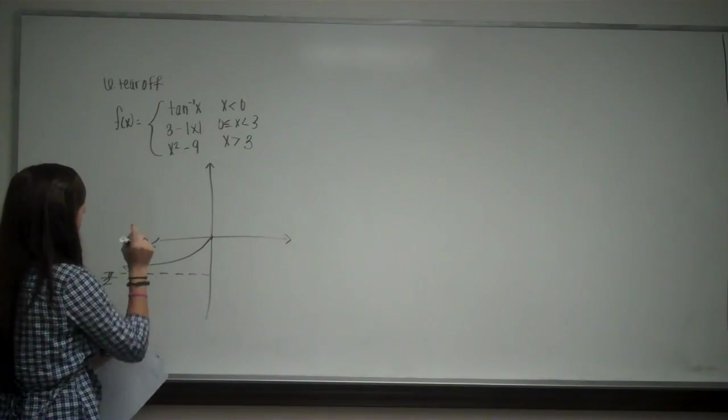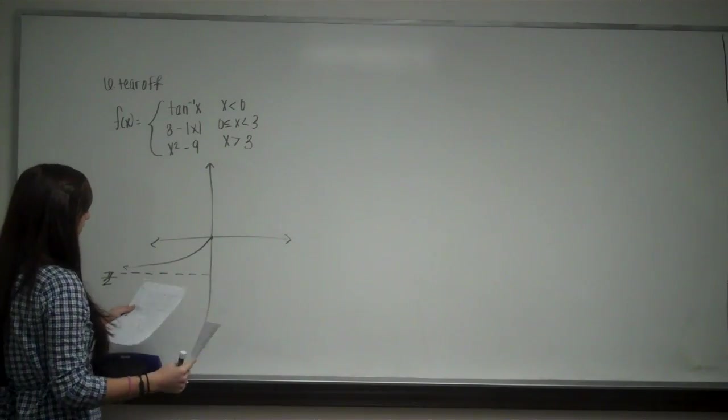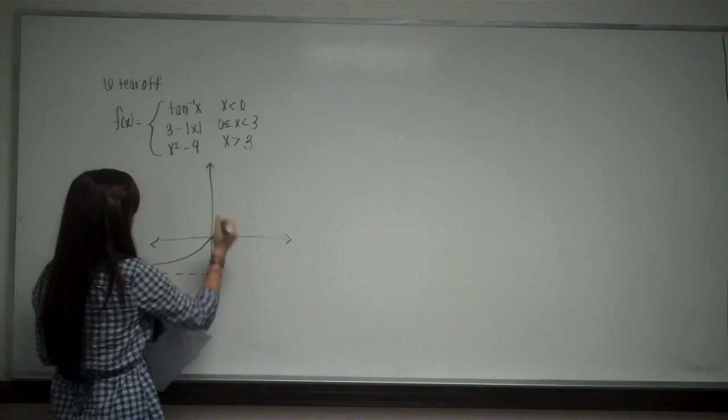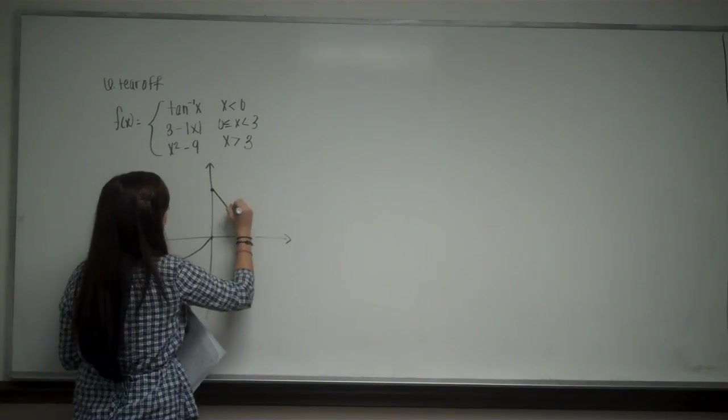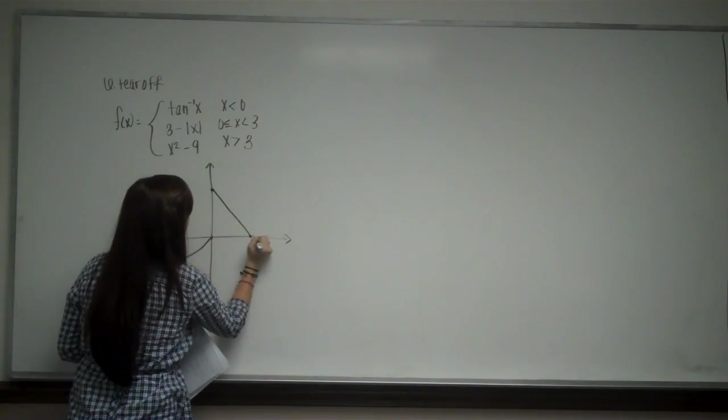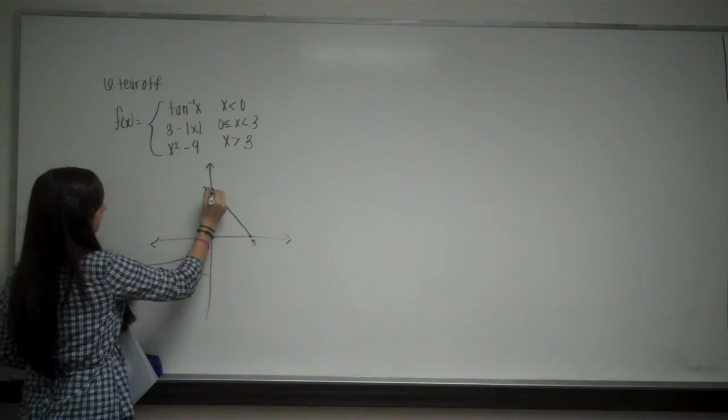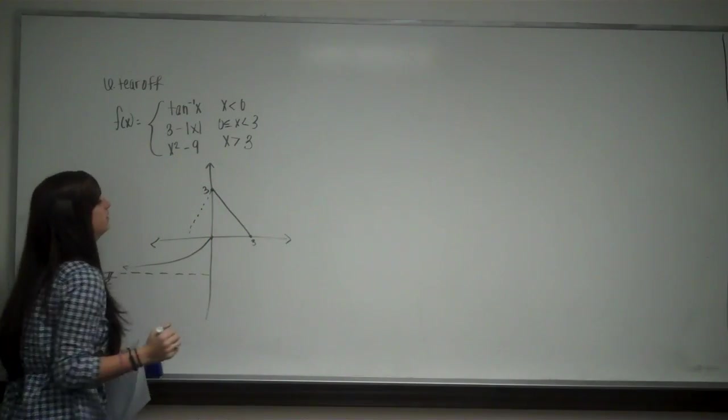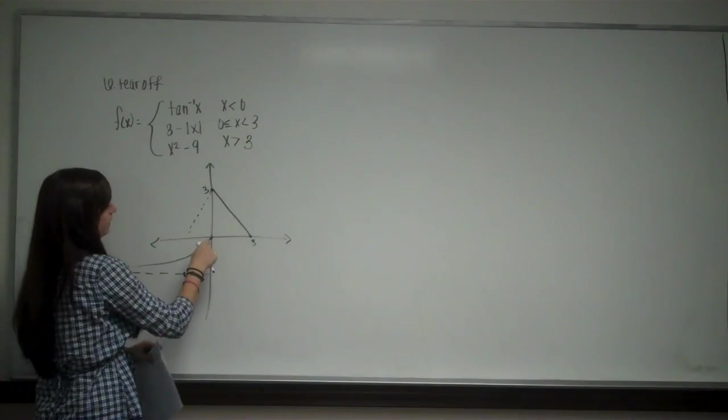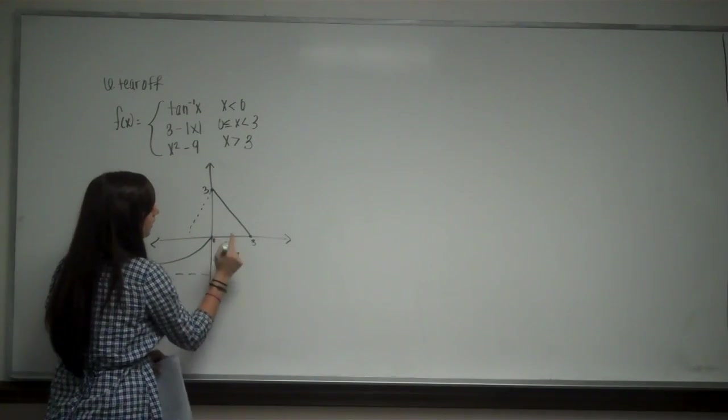And now I have three minus the absolute value of x. So that is going to go from three here and down to three here. So this is three and this is three. Again, there usually would be another area here. But I don't include that because it says that x has to be between zero and three.